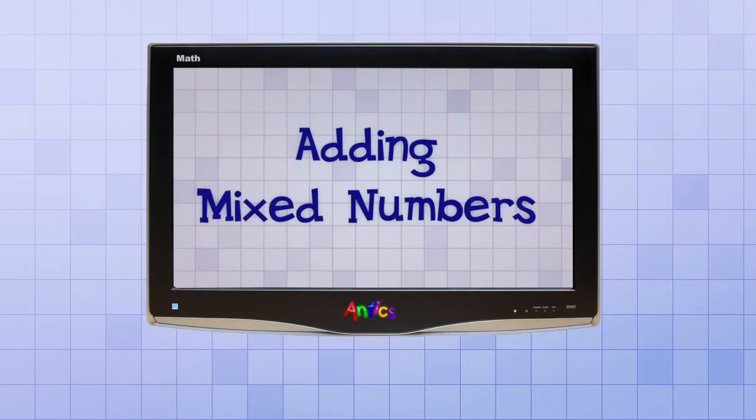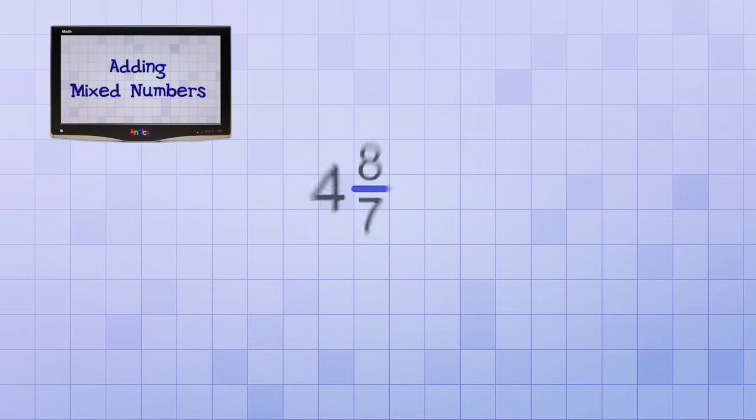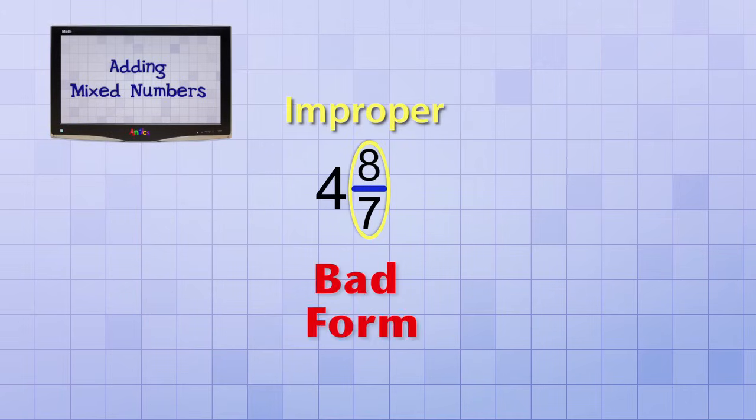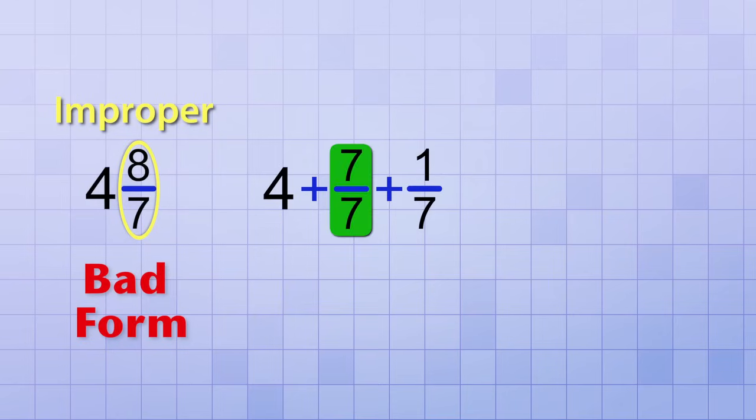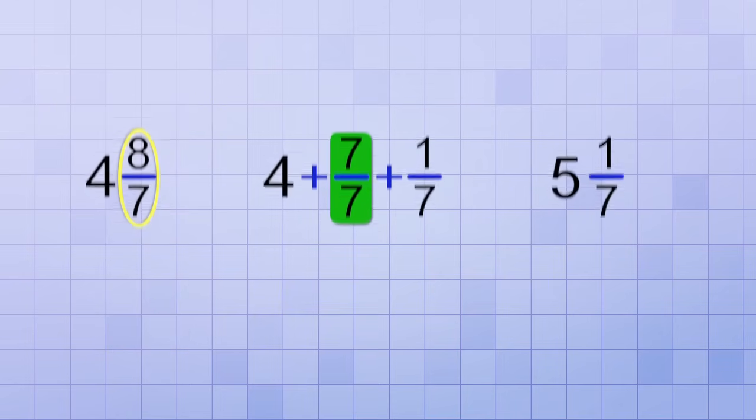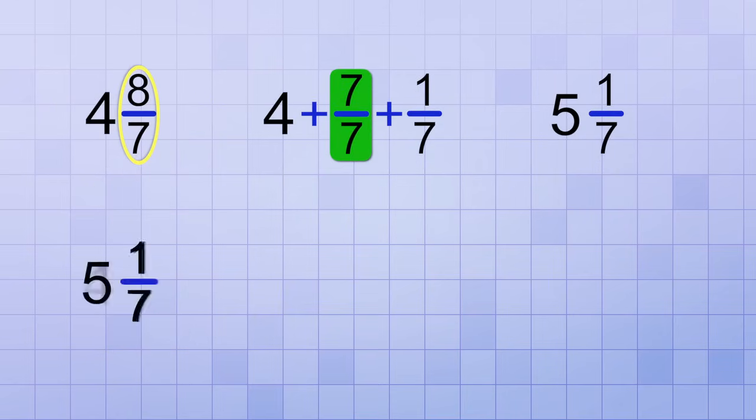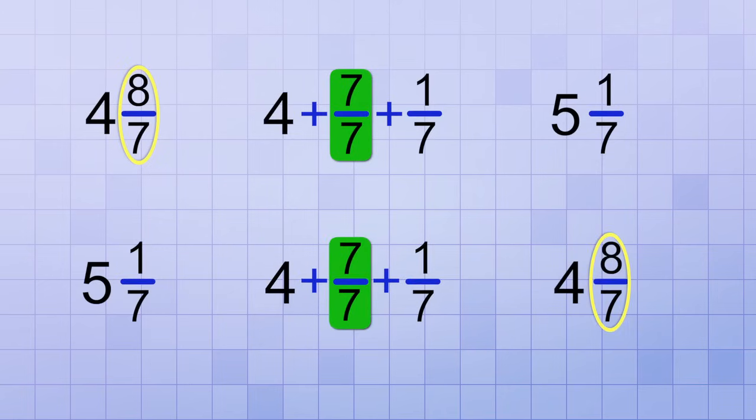In the video about adding mixed numbers, we learned that a mixed number with a fraction part that's improper is bad form, because you can simplify out a whole fraction and then add it to the whole number part. Well, we can do that process in reverse also. We can subtract out 1 as a whole fraction from the whole number part and add it to the fraction part to get an improper fraction. And even though that's considered bad form, it's okay because it's not our final answer. And it helps us subtract the fraction column without getting a negative fraction.